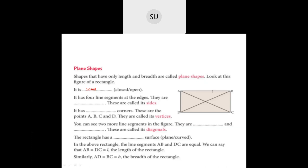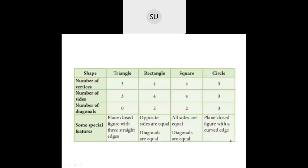The rectangle has four corners, called vertices: A, B, C, and D. Lines AC and BD, which are slanting lines inside the figure, are called diagonals. The rectangle has a plane surface. Line segments AB and DC are equal and represent the length; AD and BC are equal and represent the breadth.